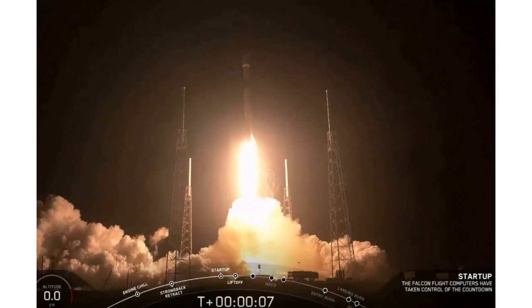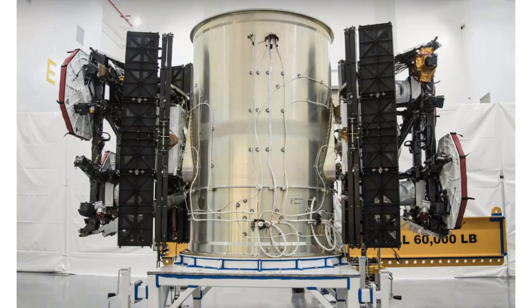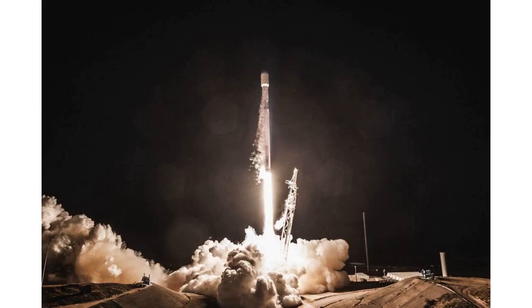As for the remaining two satellites, SpaceX intentionally fired their onboard thrusters with the goal of crashing them into the planet's atmosphere. There wasn't anything wrong with those satellites, the company just wanted to test the deorbiting process. That means that five total satellites are headed into a fiery grave.